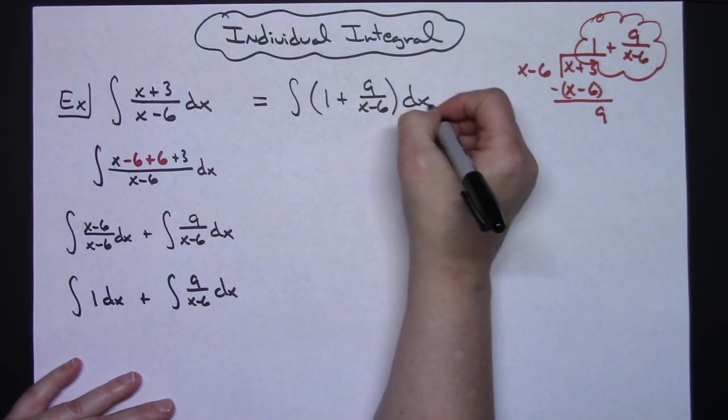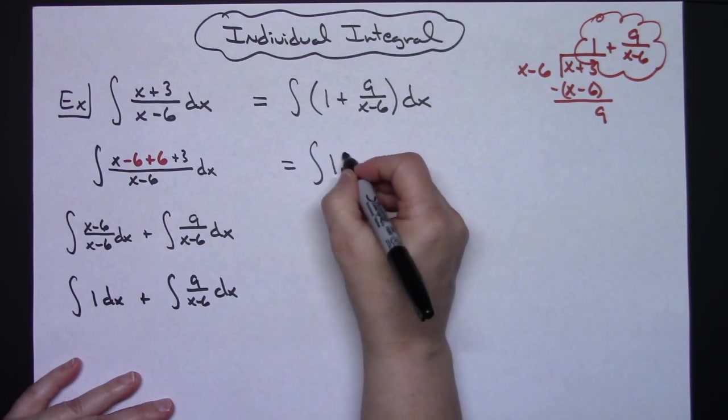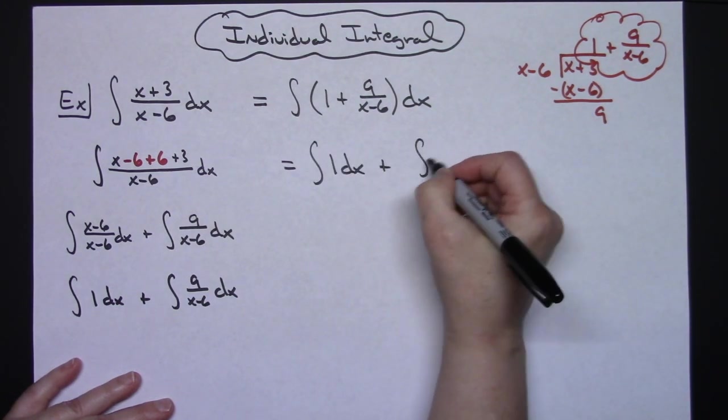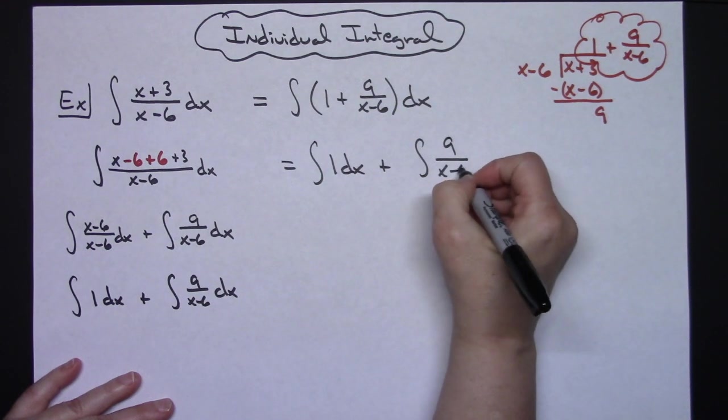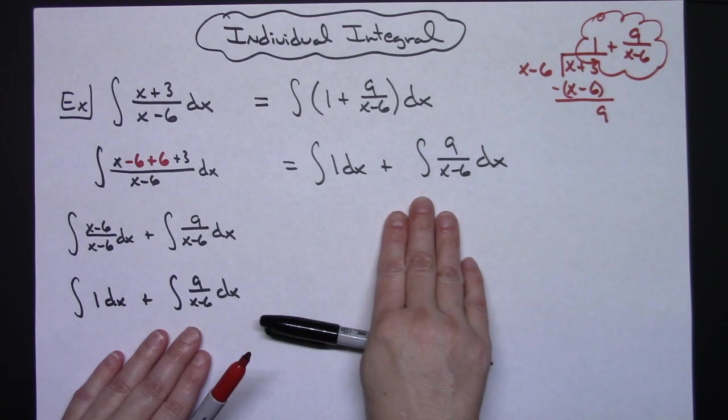And then we would separate that into our two integrals: the integral of 1 dx plus the integral of 9/(x-6) dx, which again is the exact same thing I got over here.